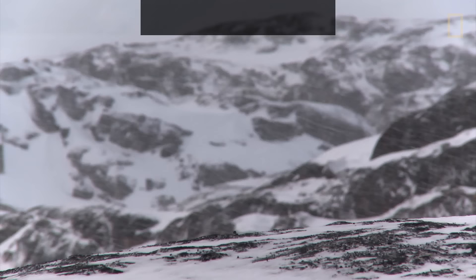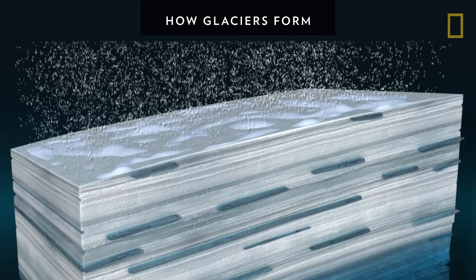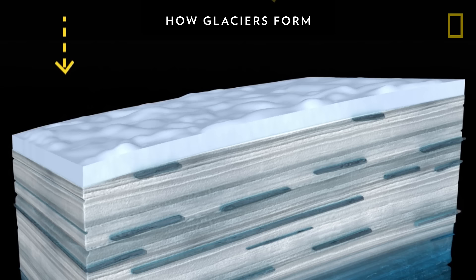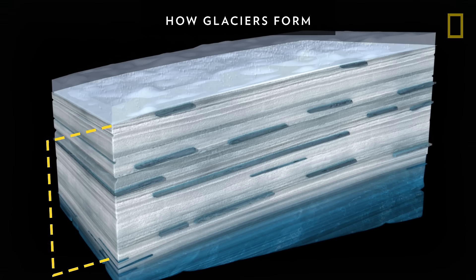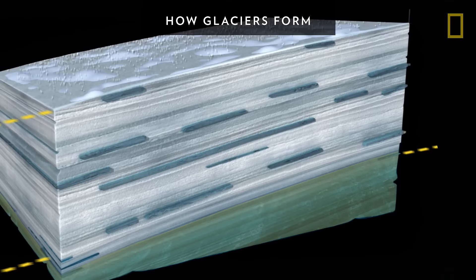Glaciers can form over years when more snow piles up than melts. Soon after falling, the snow begins to become denser and more tightly packed. When new snow falls and buries the previous year's snow, the bottom layer becomes even more compressed. The dense, grainy ice that has survived one year's melt cycle is called firn. When the ice grows thick enough, the firn grains fuse into a huge mass called glacial ice.